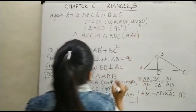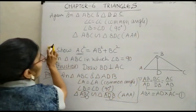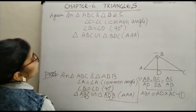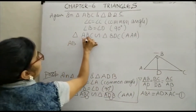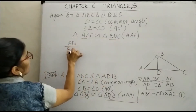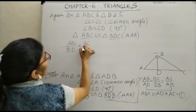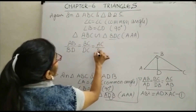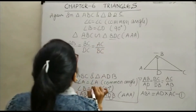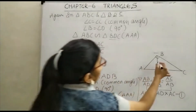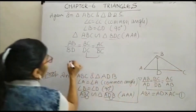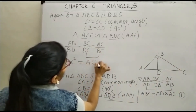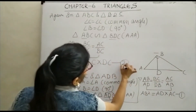By AA we take the ratio. The ratio gives us BC upon DC is equal to AC upon BC. Now we take BC square. In the big triangle and this smaller triangle, BC is common. So we get BC square is equal to AC into DC. Let this be equation number 2.